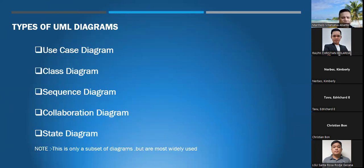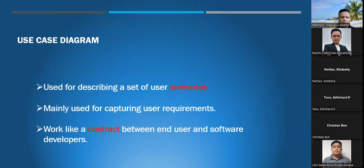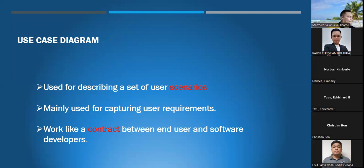Types of diagrams — you are likely familiar with these: use case diagram, class diagram, sequence diagram, collaboration diagram, and state diagram. The use case diagram is used for describing a set of user scenarios. It is mainly used for capturing user requirements and works like a contract between end-users and the developers.